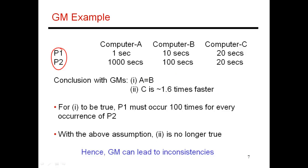So I have two programs, P1 and P2, executing on three machines, A, B, and C. The geometric means of this workload on each of the machines is root of 1000, root of 1000, and root of 400. So based on these geometric means, I'm concluding that A and B have the same performance, and C is about 1.6 times faster.